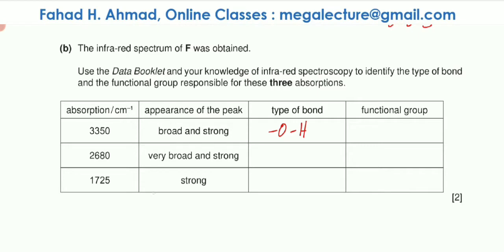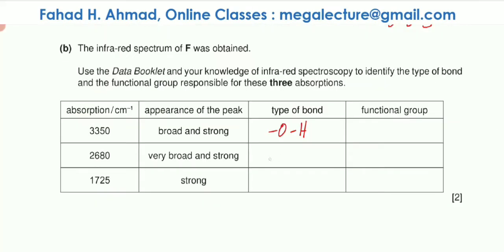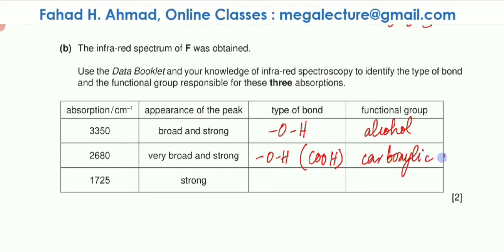The next absorption is a very broad and strong peak at 2680 cm⁻¹. Very broad peaks usually belong to carboxylic acids. Looking at the data booklet, this is the O-H bond belonging to a carboxylic acid — the same O-H bond type, but this one is the carboxylic acid O-H. So the functional group for 3350 is alcohol O-H, and for 2680 it's carboxylic acid O-H.